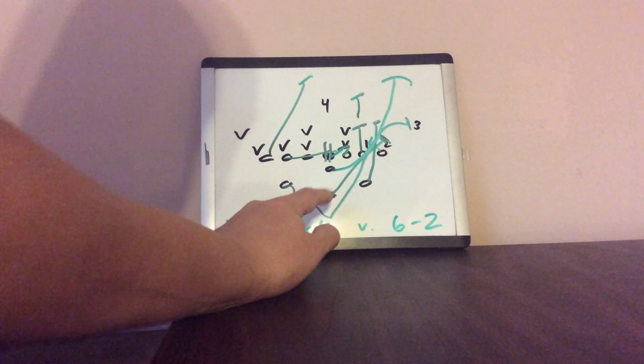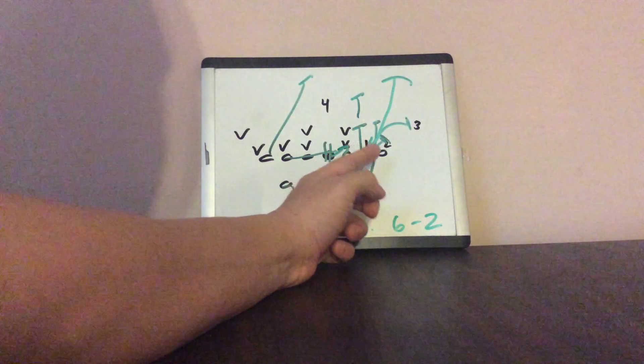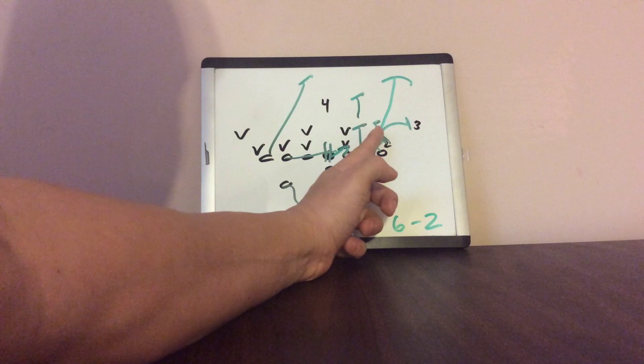goes in motion and then at the snap leads through the inside leg. Really, his aiming point's the inside leg of the receiver, but then he's going to end up outside of the receiver, inserting inside the B-back's block and kicking out number three.